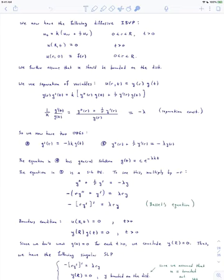We're going to use separation of variables. We let u at r comma t be a function of r times a function of t. We're going to call the function of r y and the function of t g. So we can compute the derivatives.